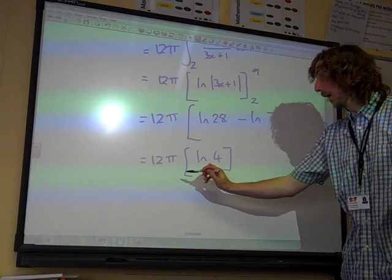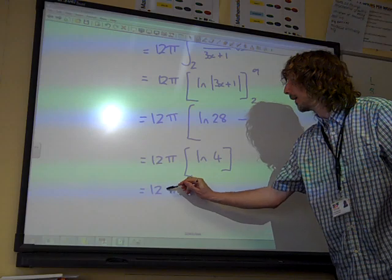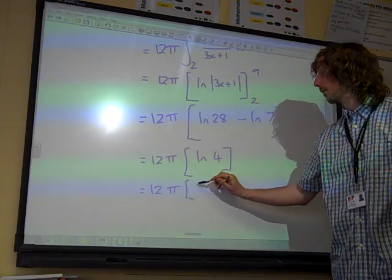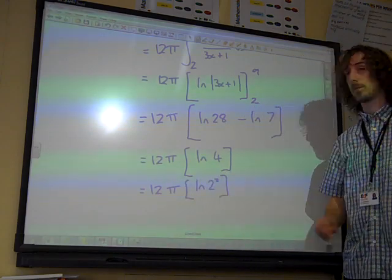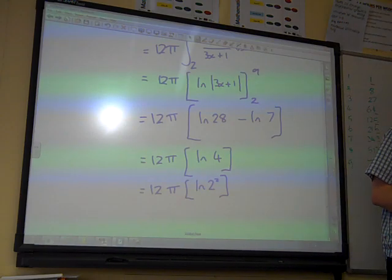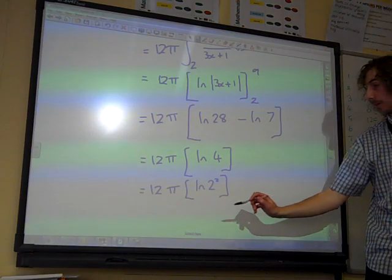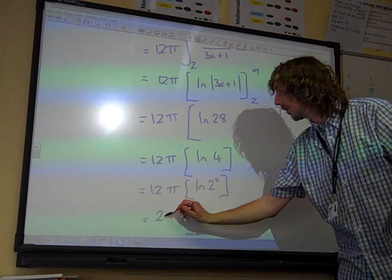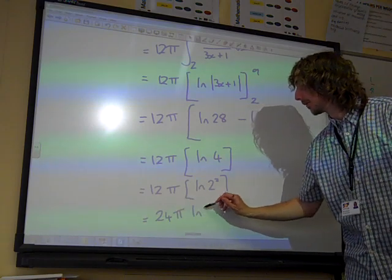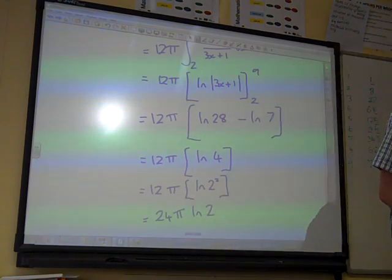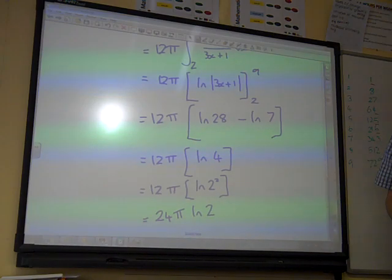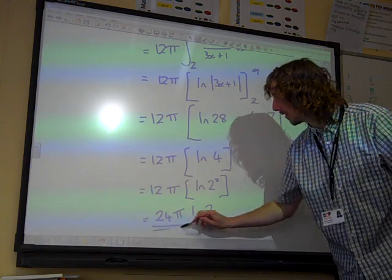It's supposed to end up with k ln 2. Now 4 is 2 squared, so that's 12 pi times the natural log of 2 squared. Our laws of logarithm says the 2 comes down to the front, so I think I'll be there. 24 pi times the natural log of 2. And 24 pi is the value of k that we were looking for.